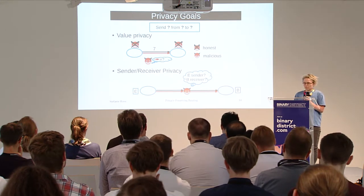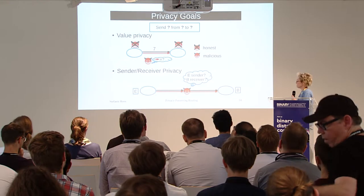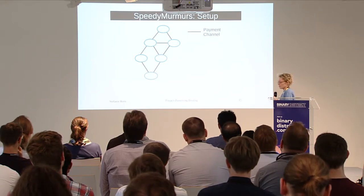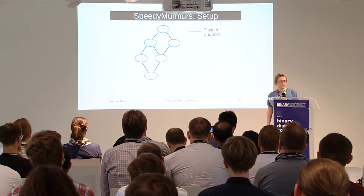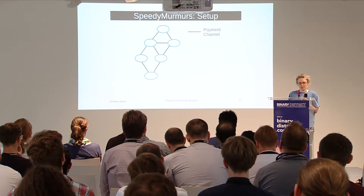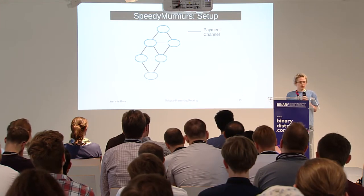Our goals with regard to performance are that we want to actually find those routes — effectively and fast. The protocol is described in three steps: first, how we do the network setup and what state information we keep; second, the actual routing algorithm; and third, how we deal with dynamics — new payment channels being opened and old ones closing.